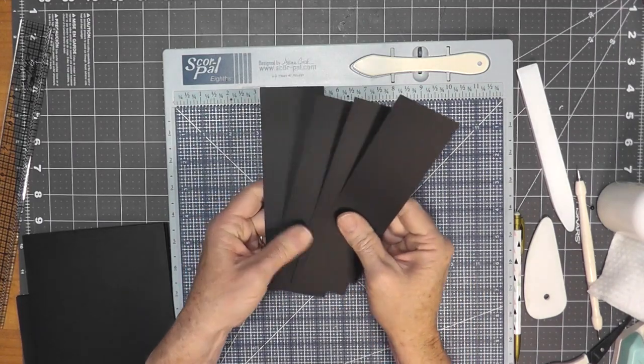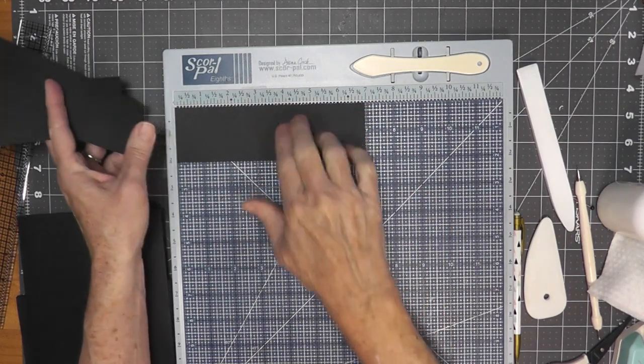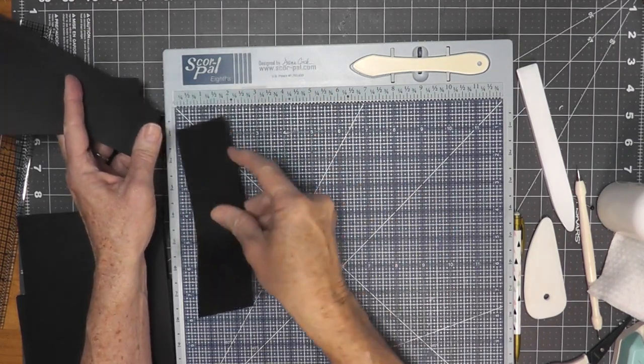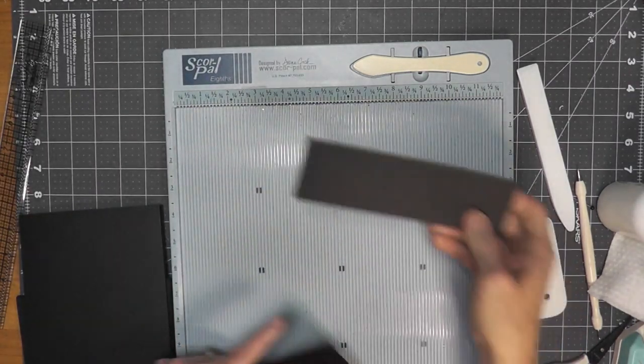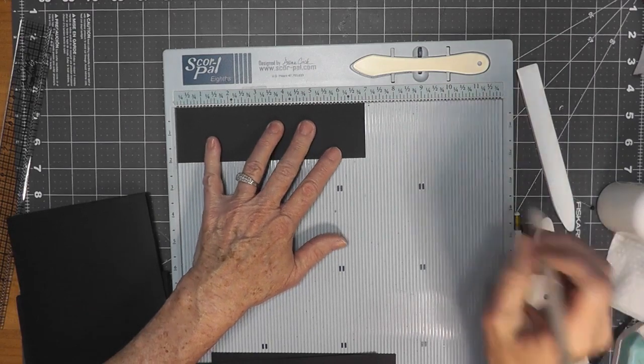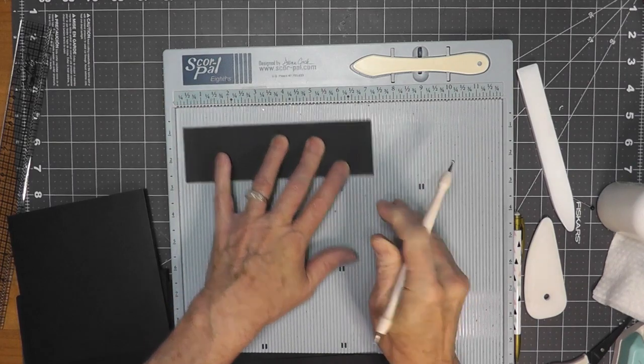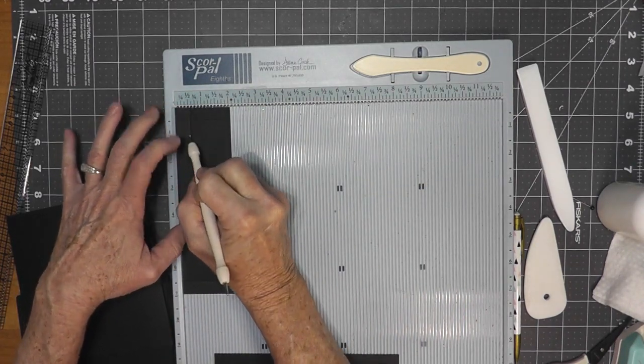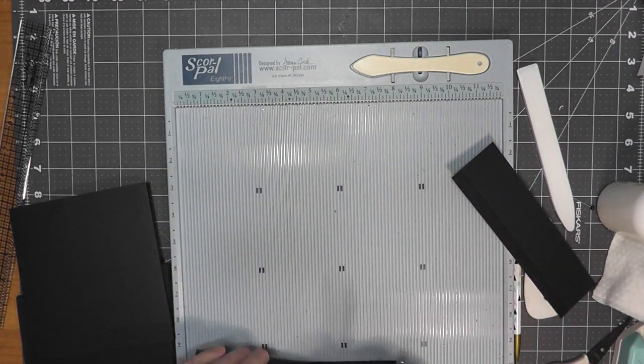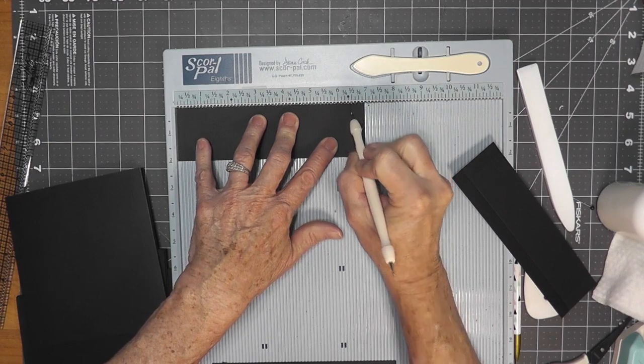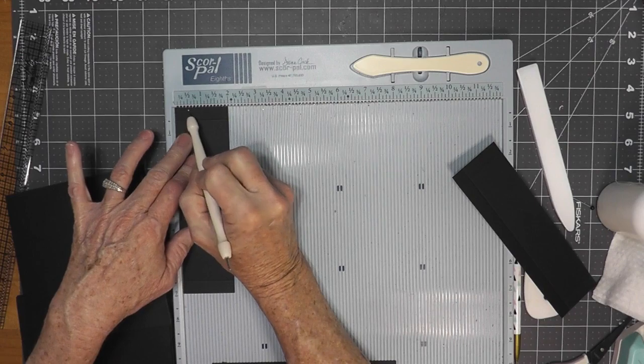Now we're ready to work on our little pockets. Now we're not going to attach these to the pages just yet but we're going to go ahead and get them ready. So you should have four that are seven inches by two inches. And we're going to score these on the seven inch side at six and a half and at a half inch. Then you will turn it, score the two inch side at just a half inch. So go ahead and do that on all four of these seven inch by two inch pieces that you cut for your pockets. You have one for each page set.